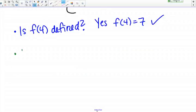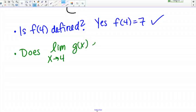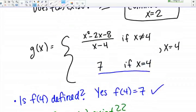Second criteria, does the limit exist? So does the limit as x goes to 4 of g of x exist? Okay, so this criteria is a little bit more involved to check. We're actually going to have to take the limit of this function as x goes to 4 and see what it is.